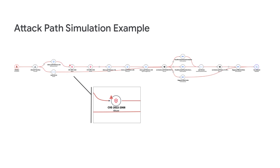In this example, we see that the critical path — meaning the path of least resistance — is leveraging a specific CVE that, in combination with access rights, enables the attacker to assume a service account and, in turn, perform actions on a BigQuery table with valuable data. Addressing this specific CVE is thus key.